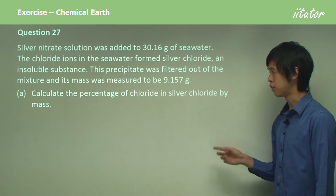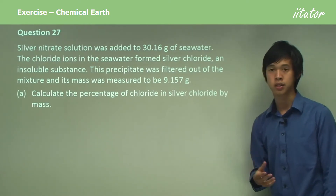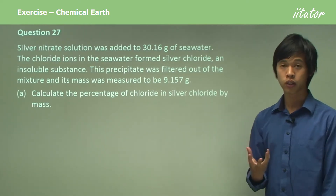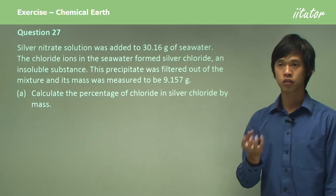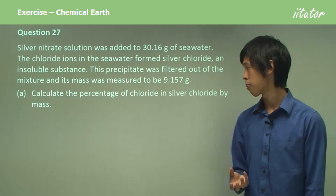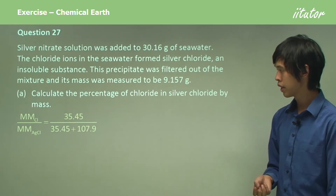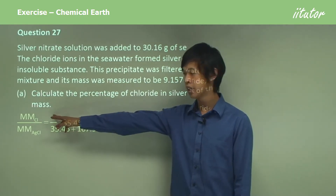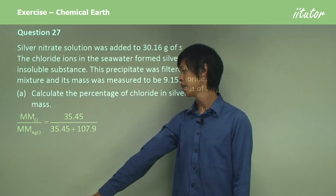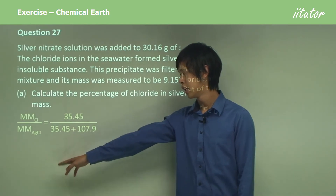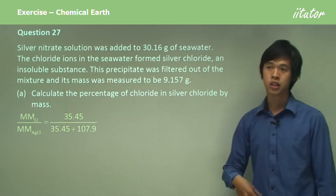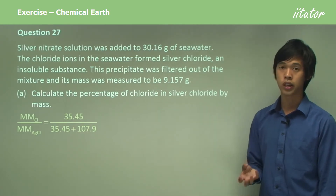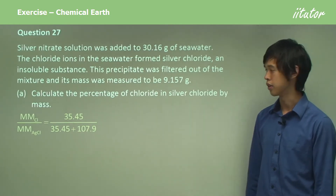Calculate the percentage of chloride in silver chloride by mass — that is, what percentage of silver chloride is actually just chlorine. To work that out, all we have to do is take the molar mass of chlorine, divide by the molar mass of silver chloride, and that will give us the percentage mass of chlorine or chloride in silver chloride.